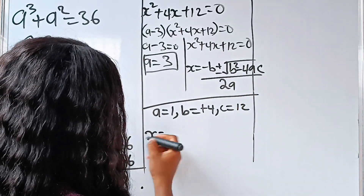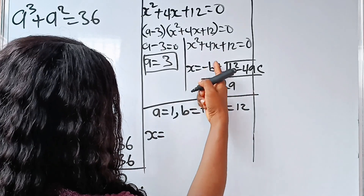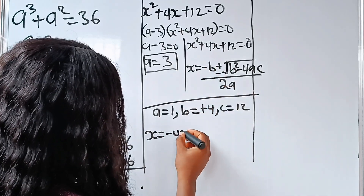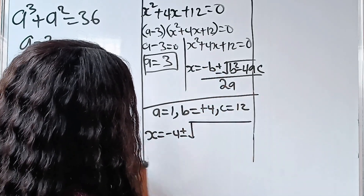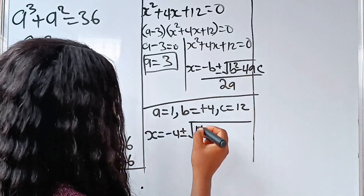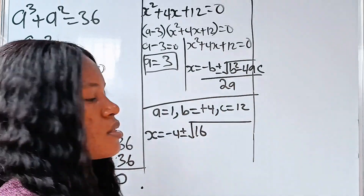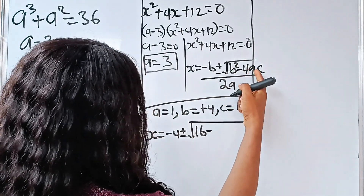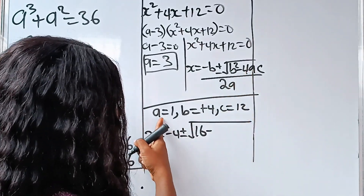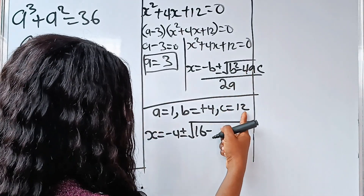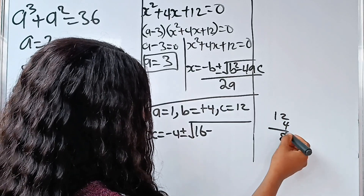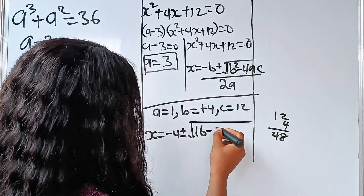So we have x equal to minus b, that is minus 4, plus or minus the square root of b squared — 4 squared — which gives us 16, minus 4 times a (which is 1) times c (which is 12). 4 times 12 gives us 48.